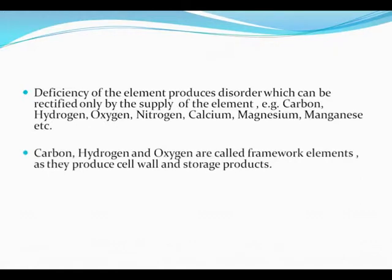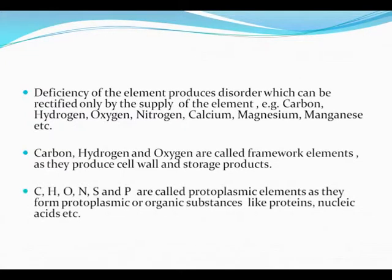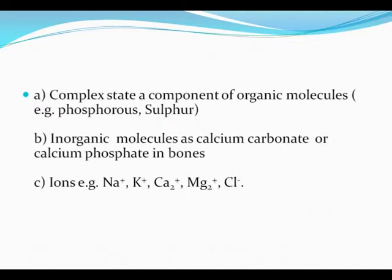Carbon, hydrogen, and oxygen are known as framework elements, as they produce the cell wall and storage products. Carbon, hydrogen, oxygen, nitrogen, sulfur, and phosphorus are called protoplasmic elements, as they form protoplasmic or organic substances like proteins and nucleic acids. Inorganic molecules such as calcium carbonate and calcium phosphate are required for bones, and ions required include sodium, potassium, calcium, magnesium, and chloride.